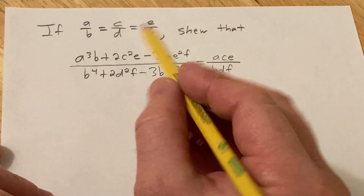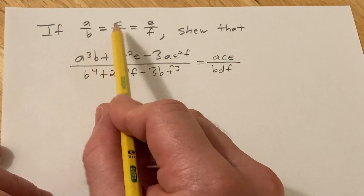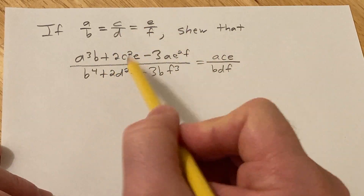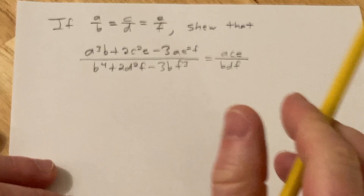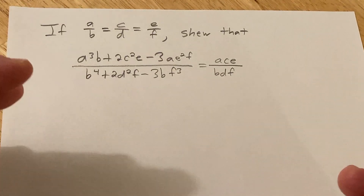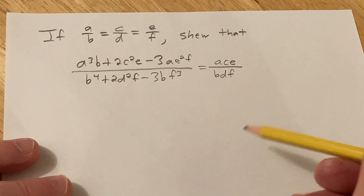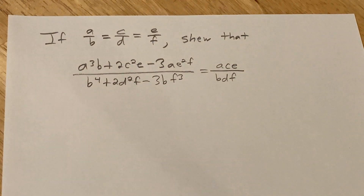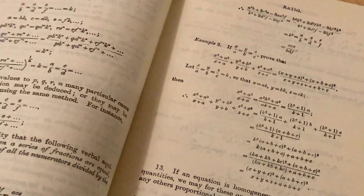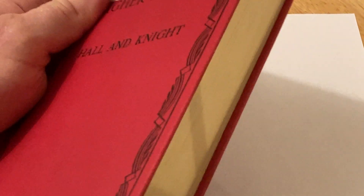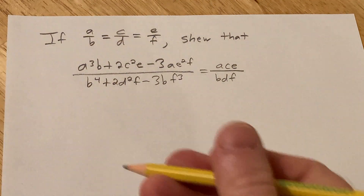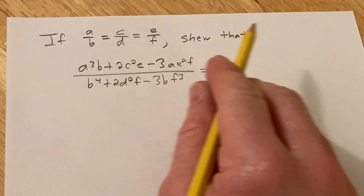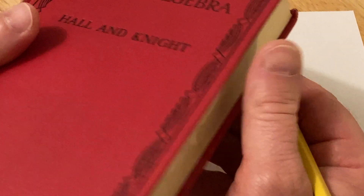Hey, we're going to do a proof. We're told that if A over B equals C over D and that equals E over F, show that this is true. So why does it say 'shoe' instead of 'show'? I don't actually know. I should have done some research on that before making this video, but I'm just sitting here doing some math and I've got a book with me. It's called Higher Algebra by Holland Knight, and this is an example in the book. We're going to try to prove it. The author tends to use the word 'shoe.' I'll leave a link in the description to the book in case you want to check it out.